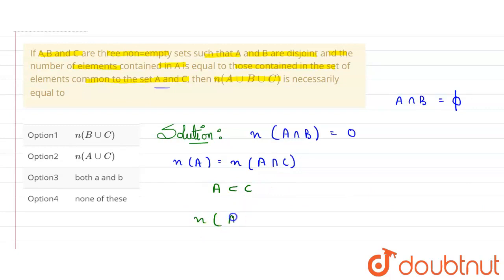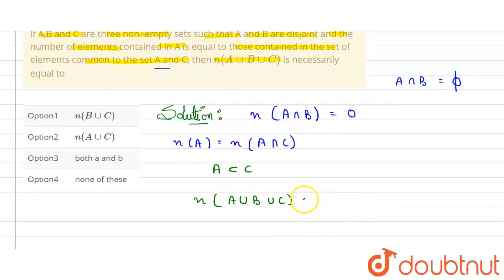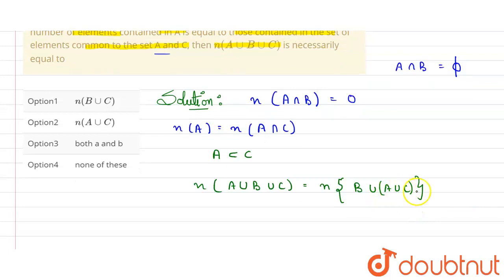Now what we need to find? We need to find the value of number of elements in A union B union C. So this can be written as, if I want to change it, it can be written as number of elements in B union A union C. And consider these A union C together. We'll perform operations on A union C.